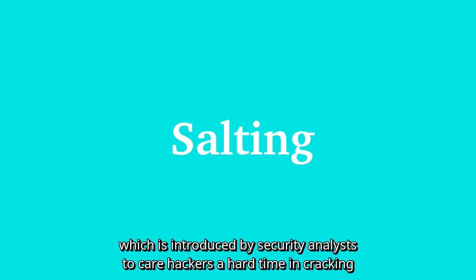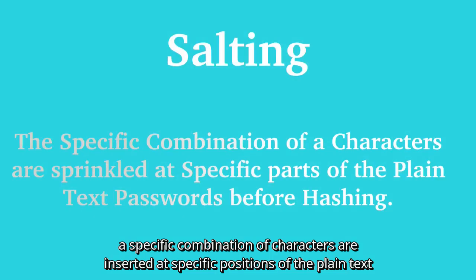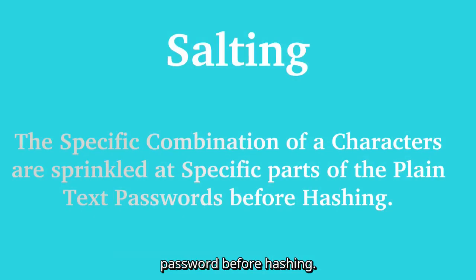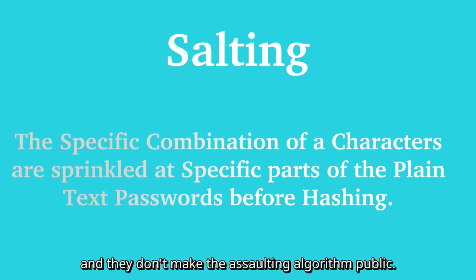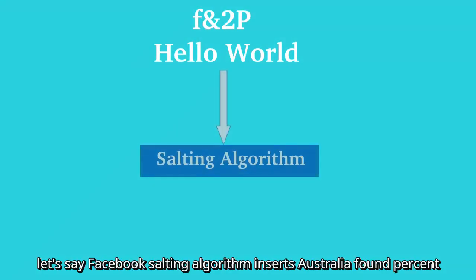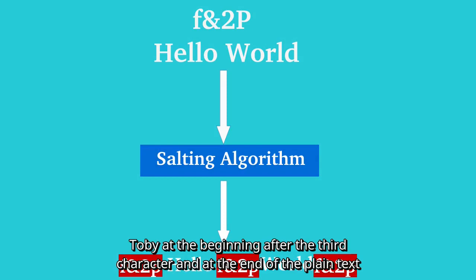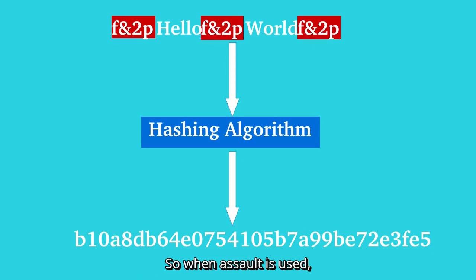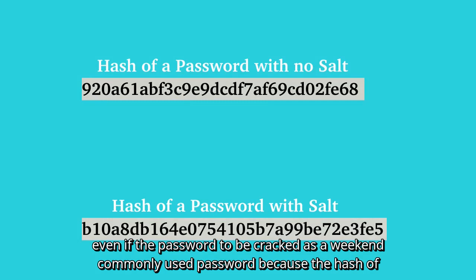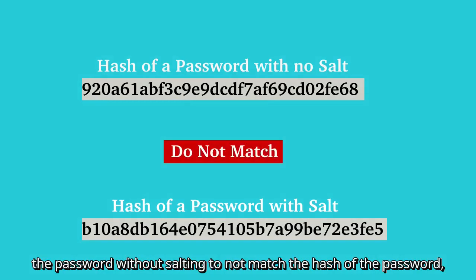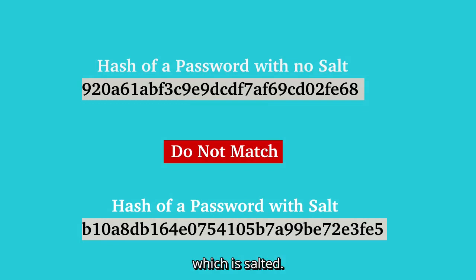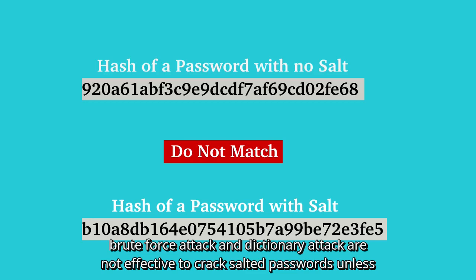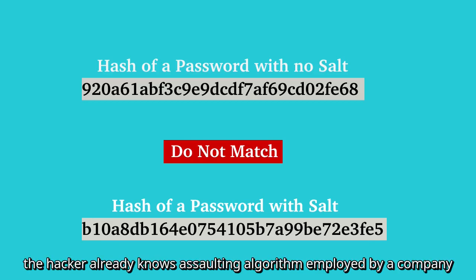A new technique called salting, introduced by security analysts, gives hackers a hard time in cracking passwords. In this technique, a specific combination of characters is inserted at specific positions of the plain text password before hashing. Every company has its own salting algorithm, and they don't make their salting algorithm public. For example, Facebook's salting algorithm might insert a string like 'f&2p' at the beginning, after the third character, and at the end of the plain text password. The salted password is then hashed. When a salt is used, rainbow tables are of no use even if the password is weak and commonly used, because the hash of the unsalted password does not match the hash of the salted password. Brute force and dictionary attacks are also not effective against salted passwords unless the hacker already knows the salting algorithm employed by the company.